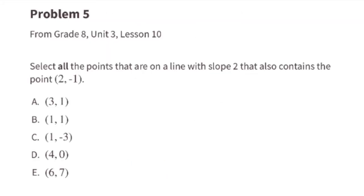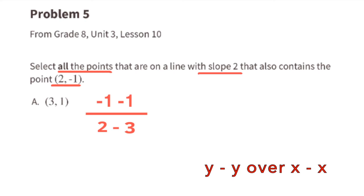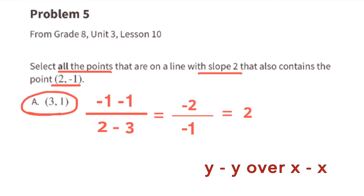Problem number 5 from 8th grade, Unit 3, Lesson 10. Select all the points that are on a line with slope 2 that also contains the point (2, -1). Using the slope formula — difference of y values over difference of x values — for point A (3, 1): negative 1 minus 1 over 2 minus 3 equals negative 2 over negative 1, which equals 2. So point A is on the line with slope 2.